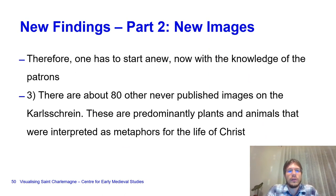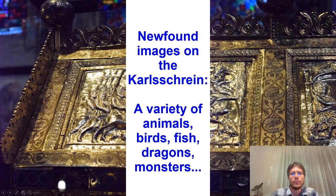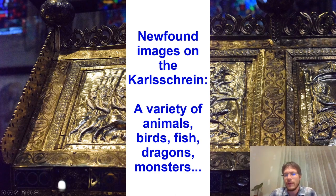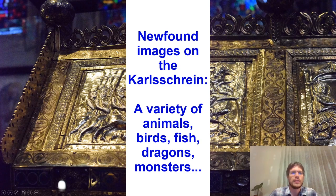We have to start anew with the knowledge of the patrons. There are about 80 other never-published images on the Karl Shrine that I found. These are predominantly plants and animals interpreted as metaphors for the life of Christ. We can see fish, a squirrel, birds, a fox perhaps, and more fish. These animals, birds, dragons, and monsters on the lower parts of the shrine are mostly allusions to how the souls struggle in this world to remain pure or to obtain resurrection, with some being direct allusions to the life of Christ.